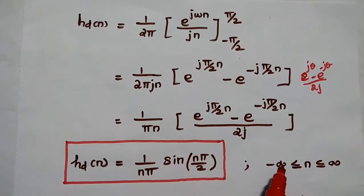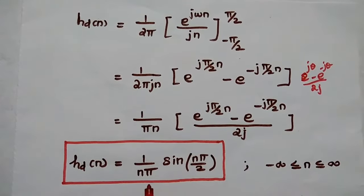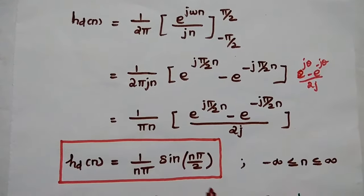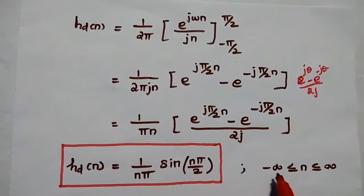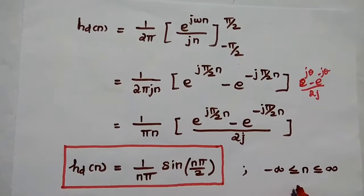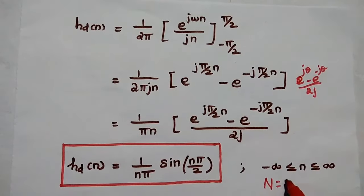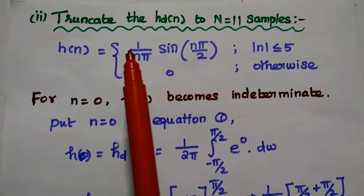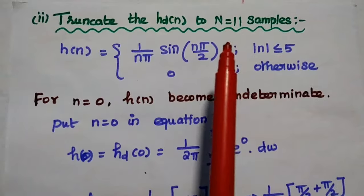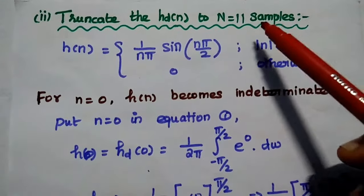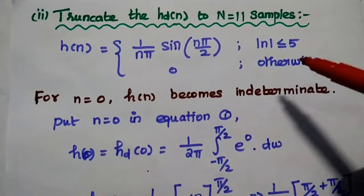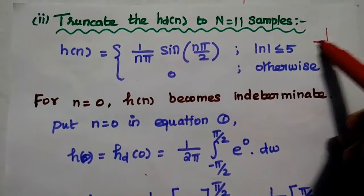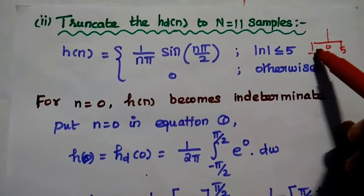Since the impulse sequence has infinite duration but we need to design a FIR (finite impulse response) filter, we must truncate the infinite duration to finite duration. In this problem, the finite duration is given as N = 11. In the second step, we truncate the infinite impulse sequence to a finite one of length N = 11. From the frequency response diagram, we know the filter coefficients are symmetric.